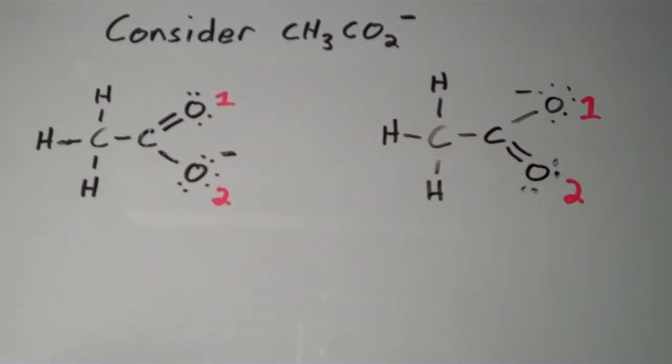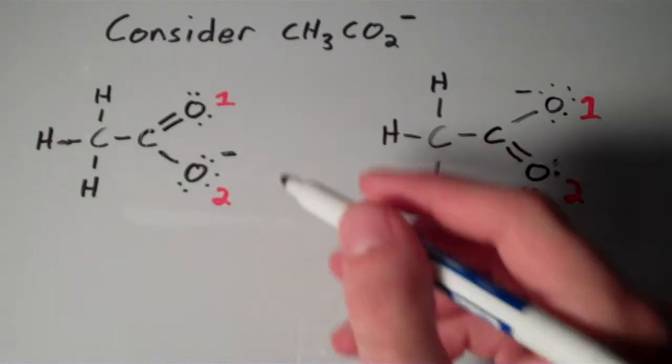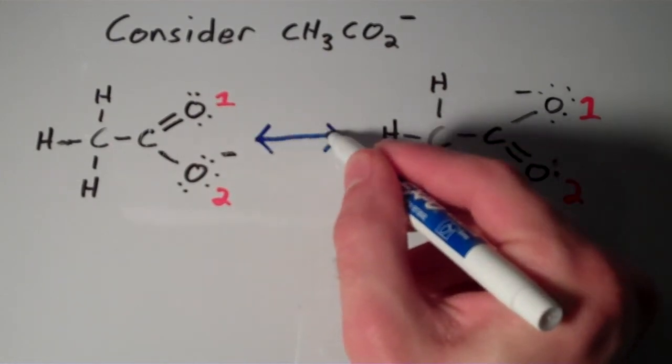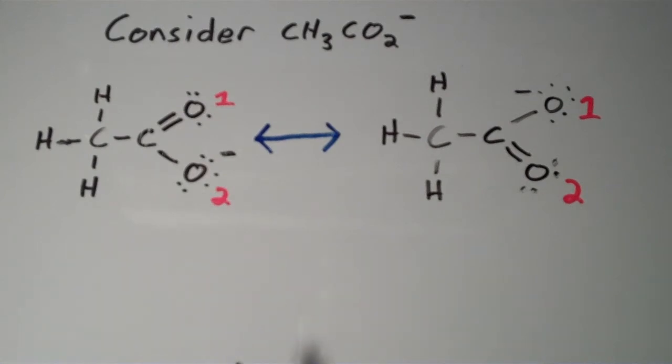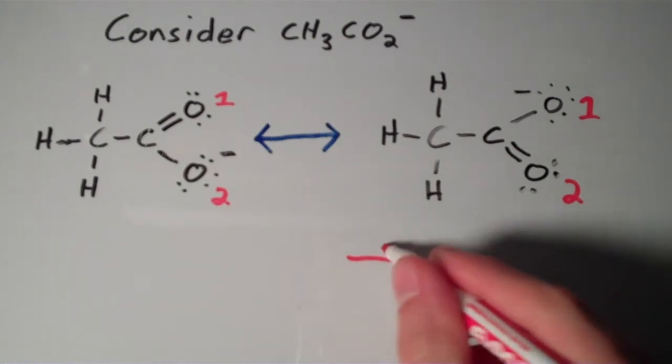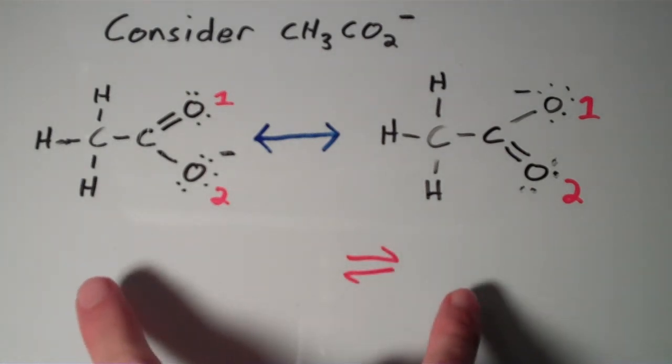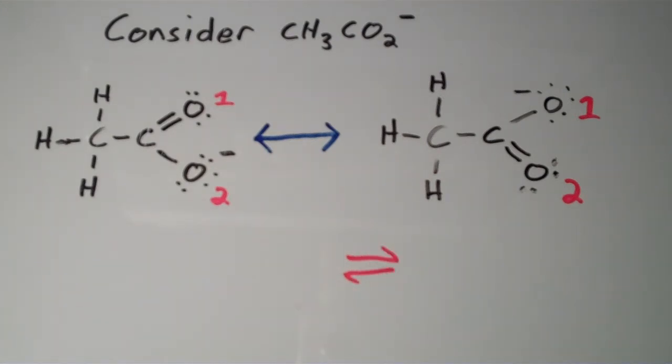These two structures are what we call resonance structures. And the way that we denote resonance structures is we separate them with a single double headed arrow. So the single double headed arrow, what does that mean? That means that it's not necessarily the same thing as equilibrium arrows. Equilibrium arrows look like this. And that's not what's going on with resonance. What's going on with resonance is that the real structure of acetate ion is sort of a hybrid between these two contributing forms. Neither of them is correct in their own right.